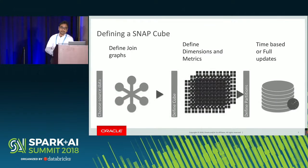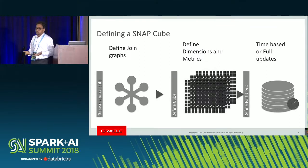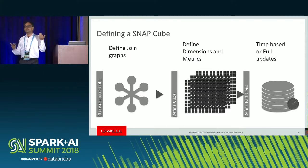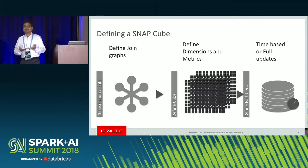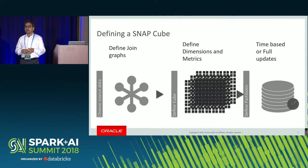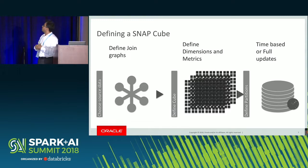There's a three-step process our customers go through when using Snap. The first step is you define a join graph — the relationship between a fact table and a set of dimension tables. Then you take the columns in all these tables and categorize them as dimensions and metrics. The third step is you partition the cube by day or month, depending on how frequently you get new data as part of your business lifecycle.